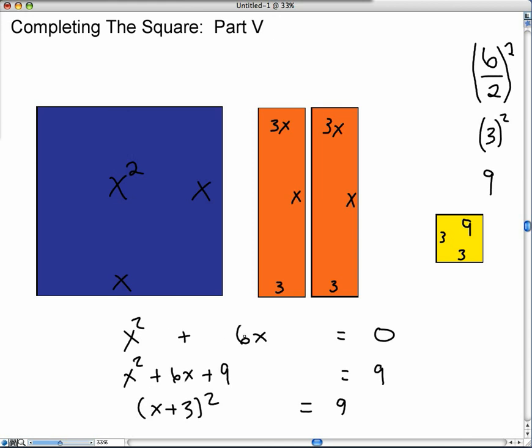So x squared plus 6x became a perfect square trinomial. So now, that's a perfect square, meaning that's a square. Let's continue on here.